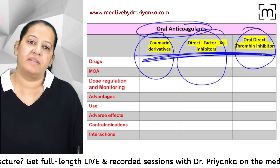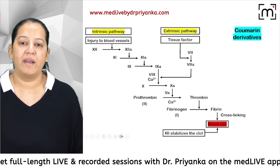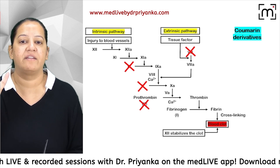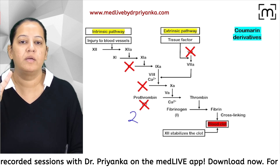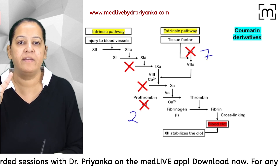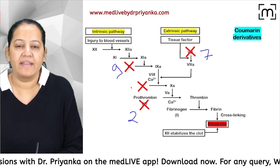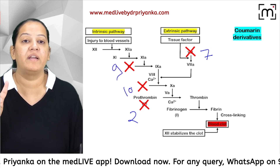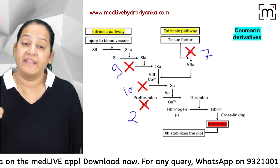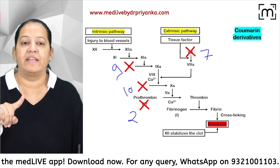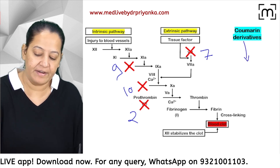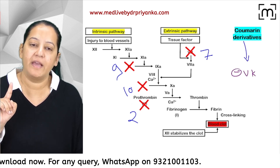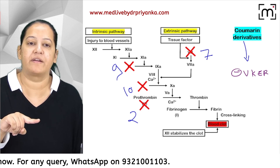Coumarin derivatives inhibit four factors: 2, 7, 9, and 10. The coumarin derivative — that is warfarin — inhibits the enzyme vitamin K epoxide reductase in the liver, and that inhibition is indirect.